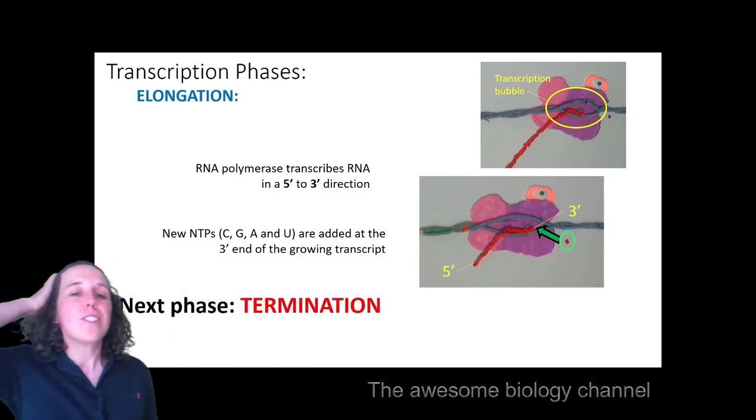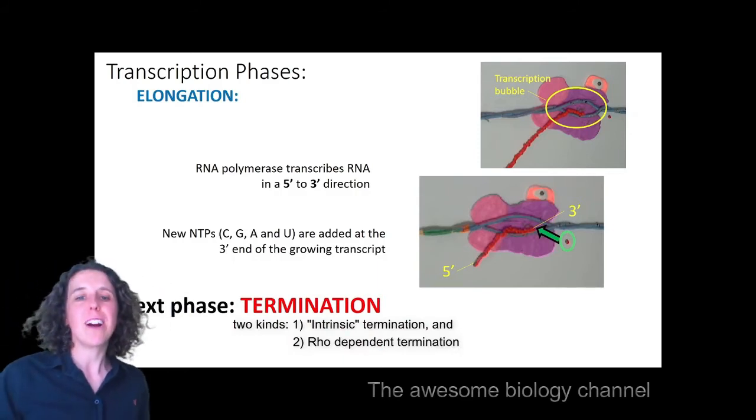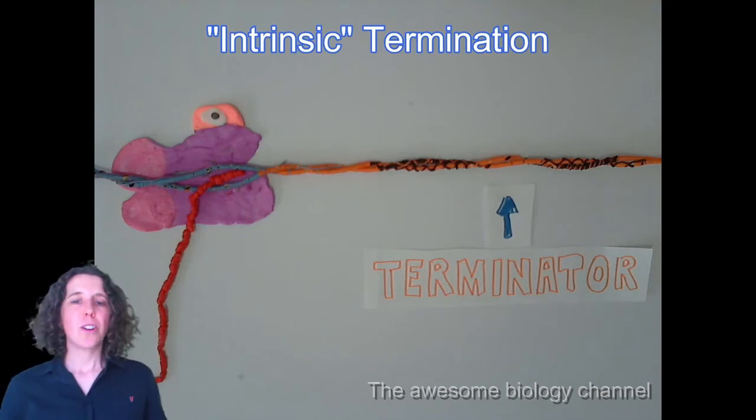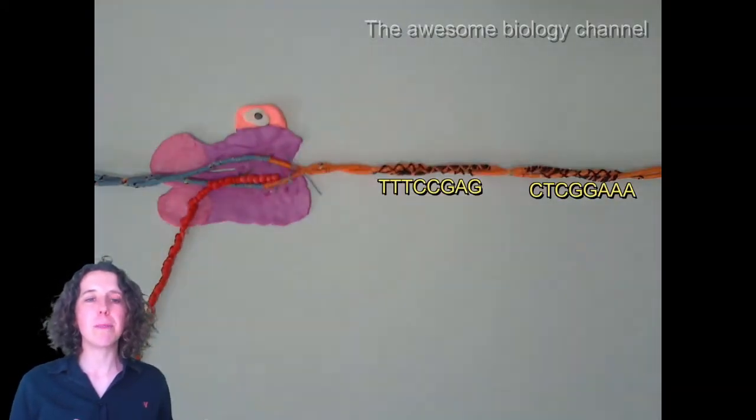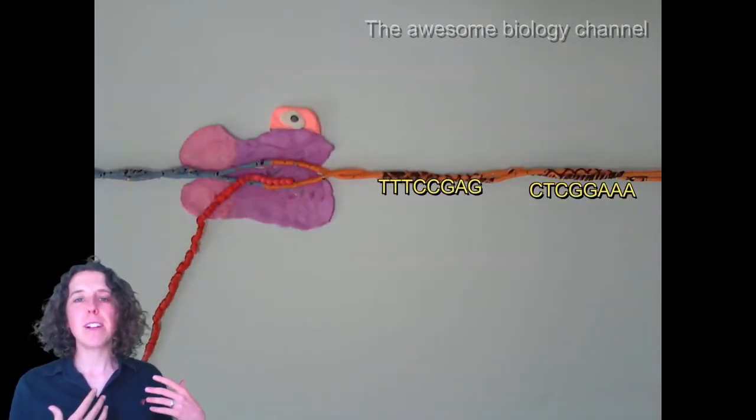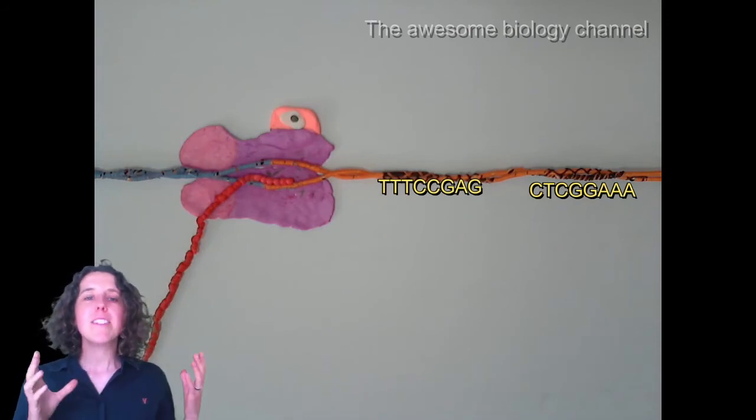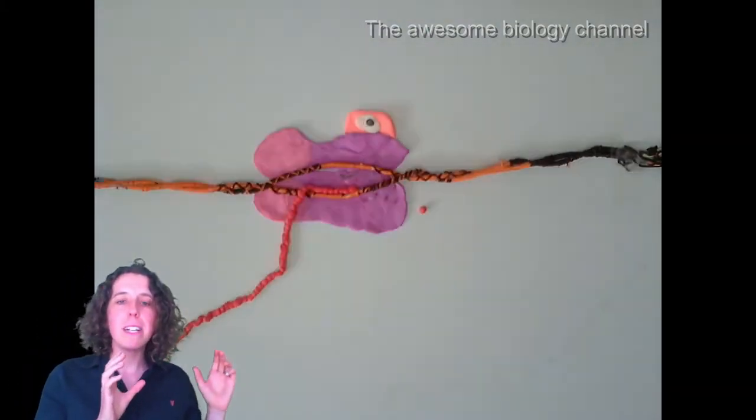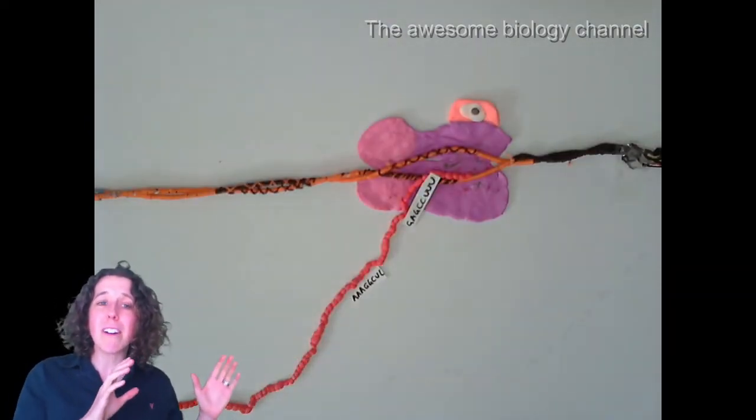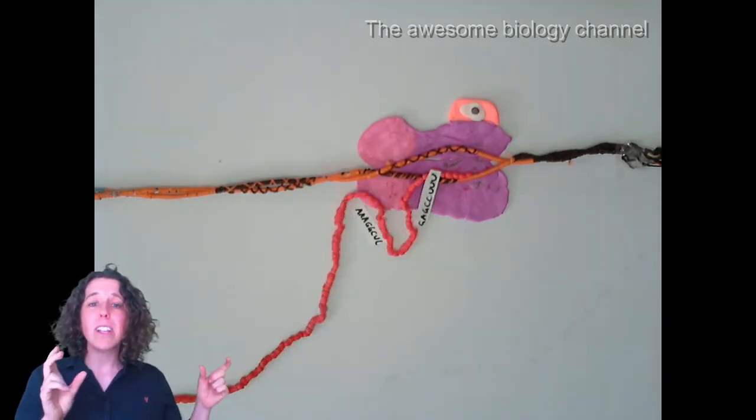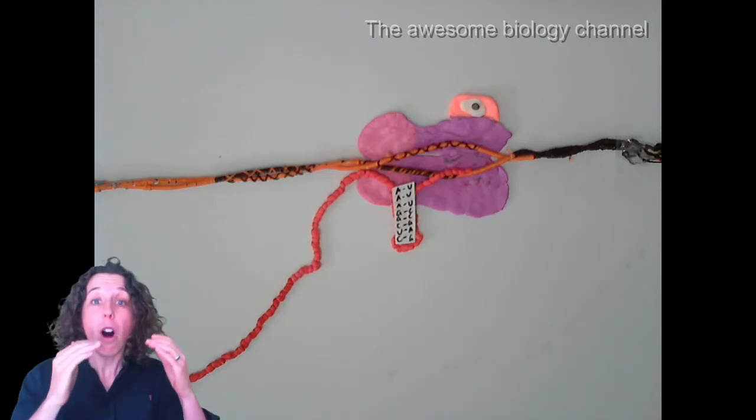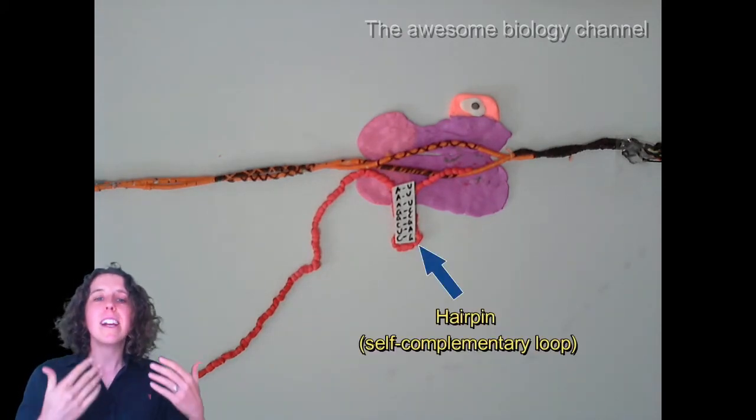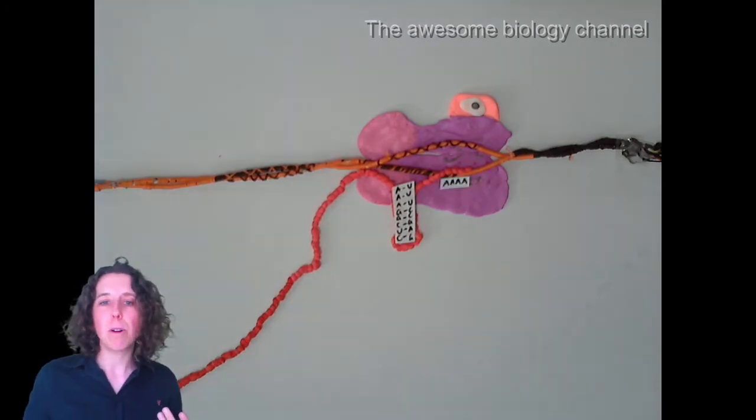Now the next phase we've got is termination. There are two different kinds of termination: intrinsic termination and rho-dependent termination. So in intrinsic termination, here we can see the terminator region. We've got our RNA core polymerase enzyme. It's going to go through, keep transcribing that RNA, but in this region of the DNA, there's two sites of DNA which are complementary to each other. Now that core enzyme keeps going and elongating and transcribing them into RNA. So now we've got two sites of RNA which are complementary to each other, and because they are, they switch back on each other and they bind to each other. So they form this secondary structure, it's called a hairpin, because they're self-complementary.